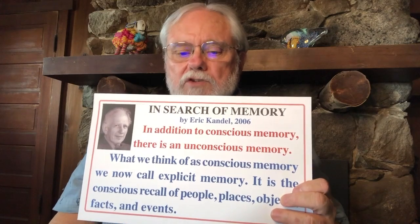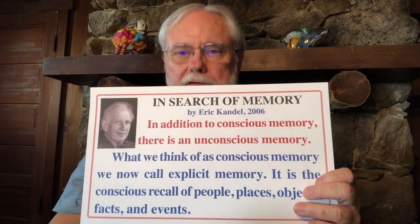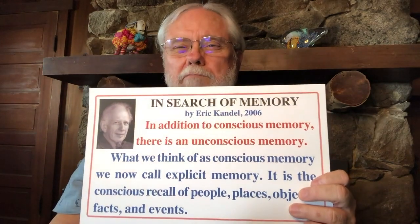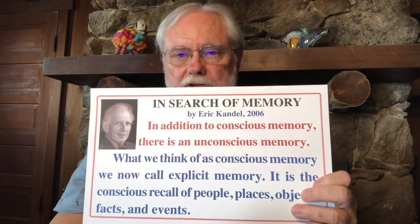What we think of as conscious memory we now call explicit memory. It is the recall of people, places, objects, facts, and events. To remember something well, you have to ask yourself consciously: who are the people in the text like the people I know? Where are the places like the setting of the story? What objects, facts, and events of my life are similar to those in the story? This all has to take place at a conscious level — you have to think about it.